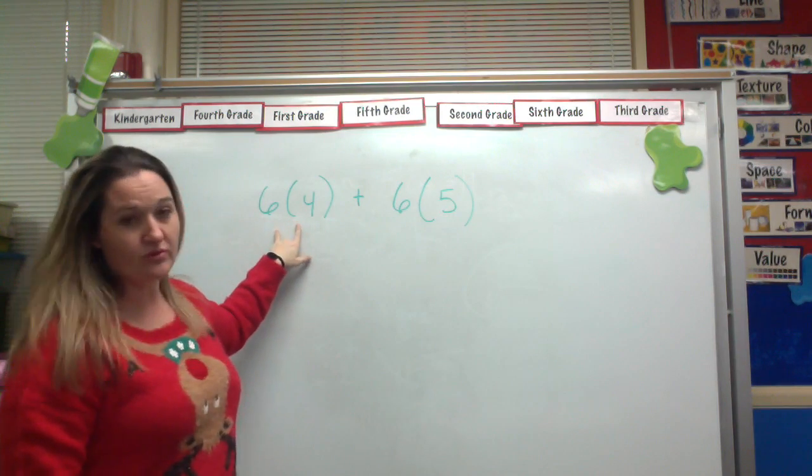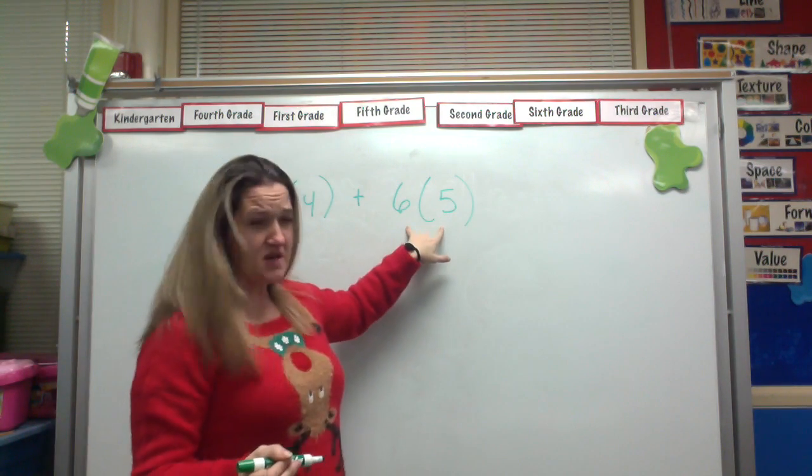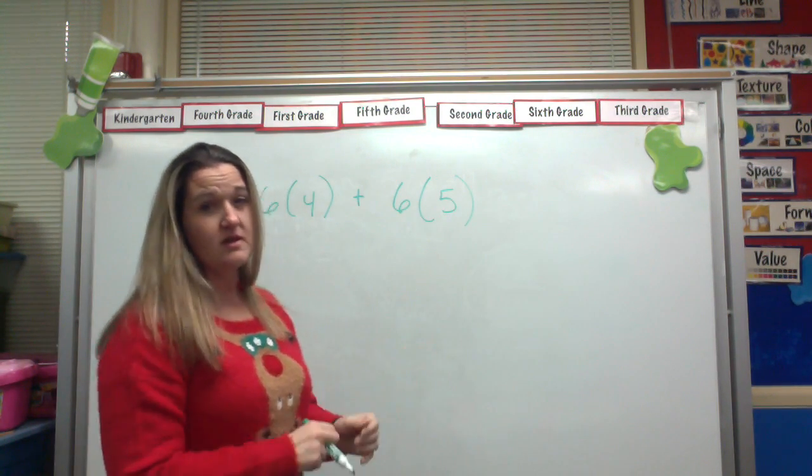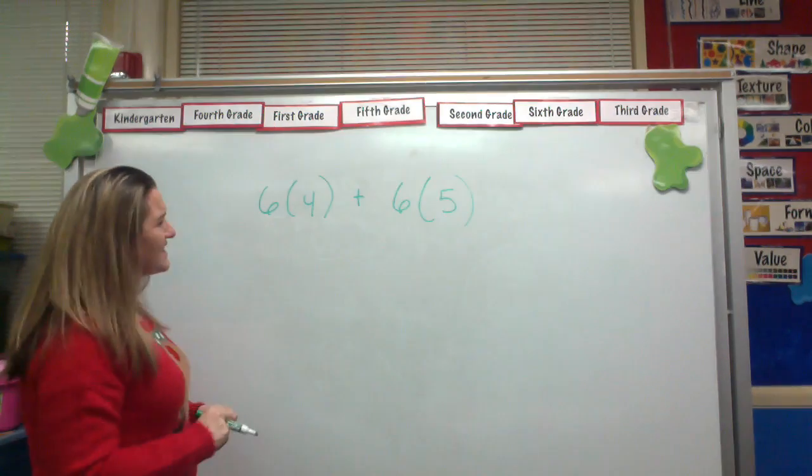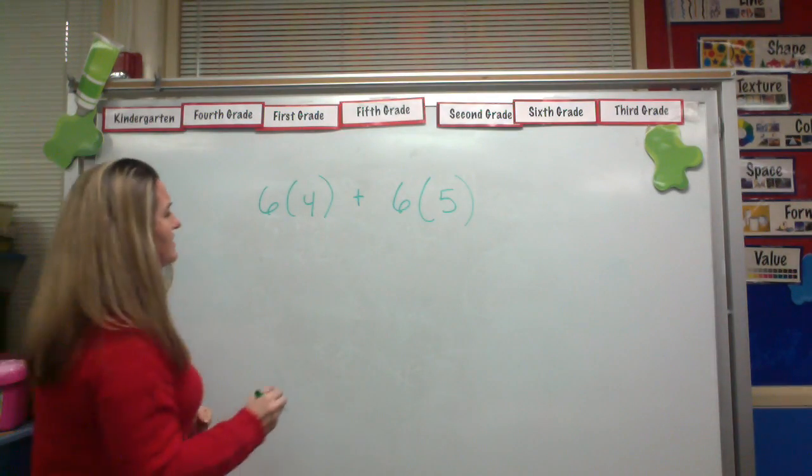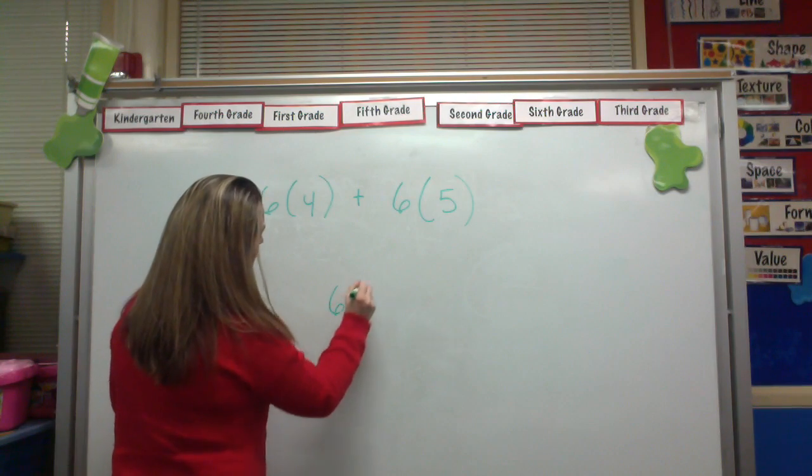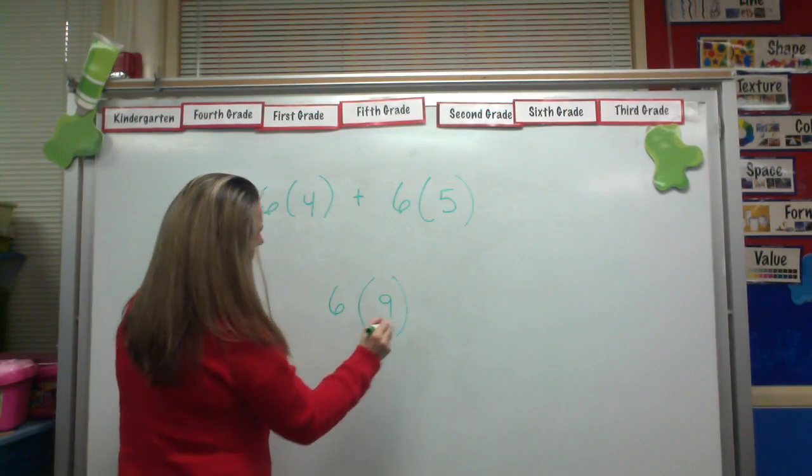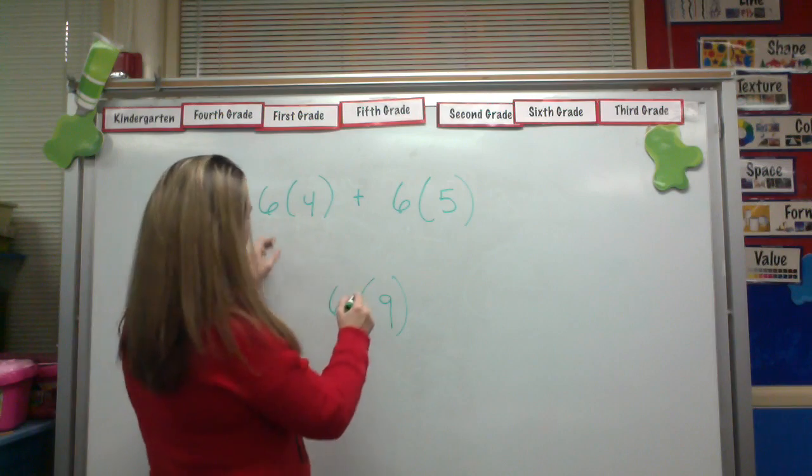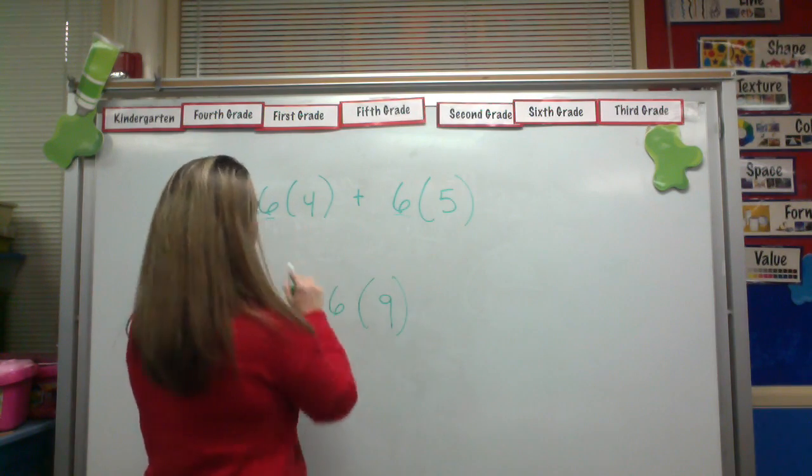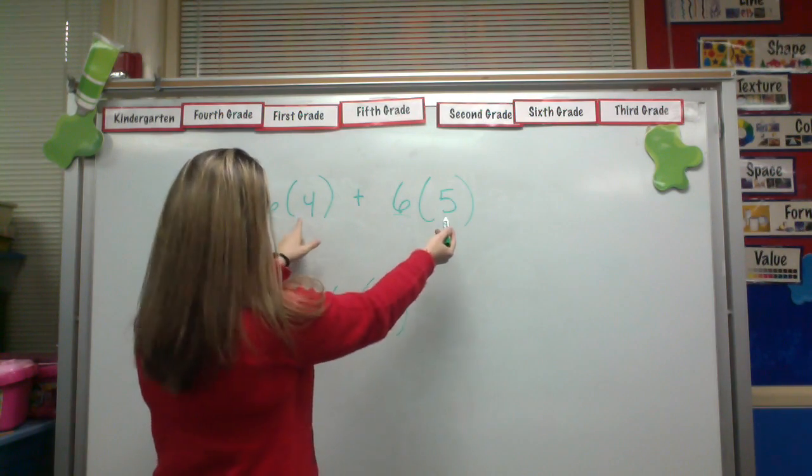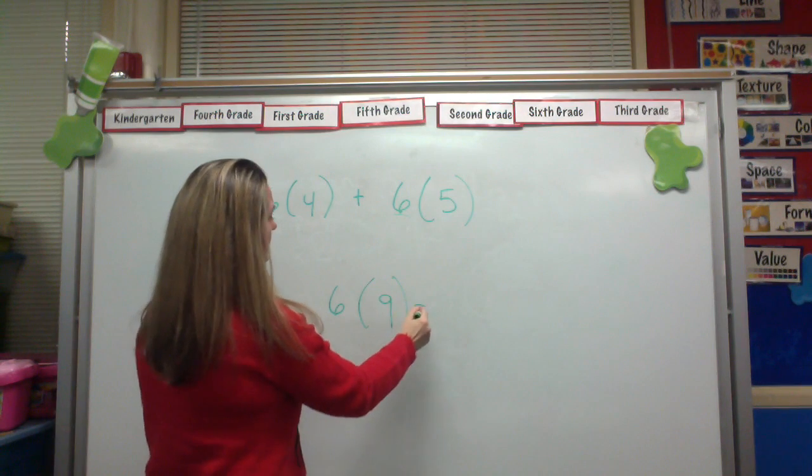6 times 4, well that's 24. 6 times 5, that's 30. That's essentially the same thing as saying 6 times 9. Basically, the 6 is the same on both, right? And all I have to do is then just add those two.